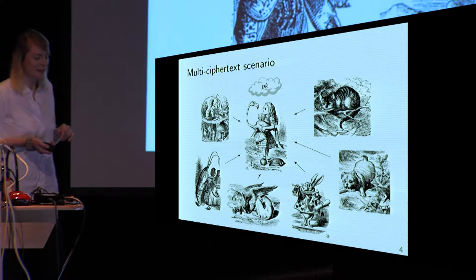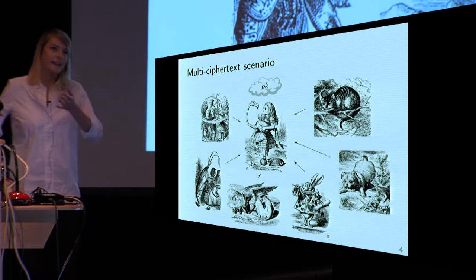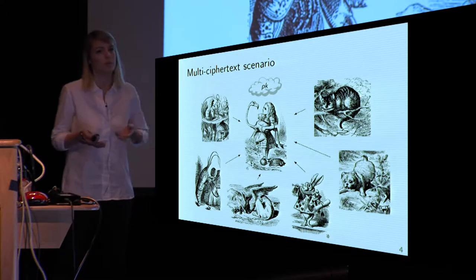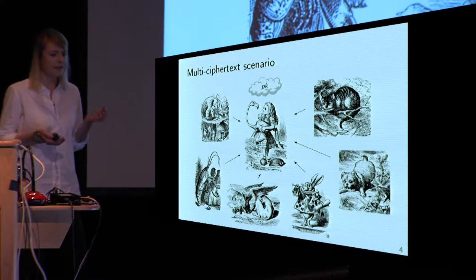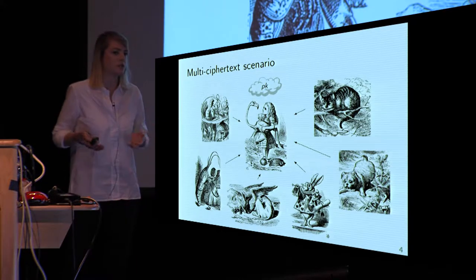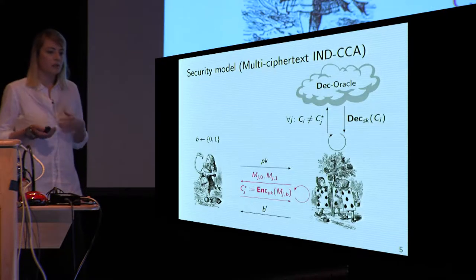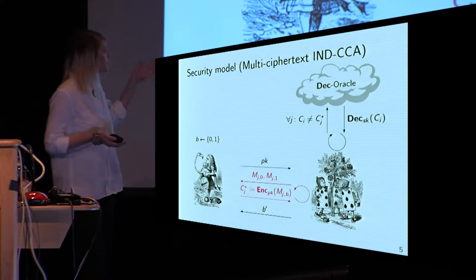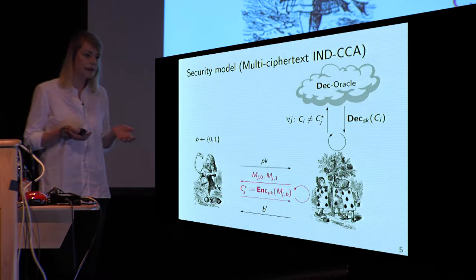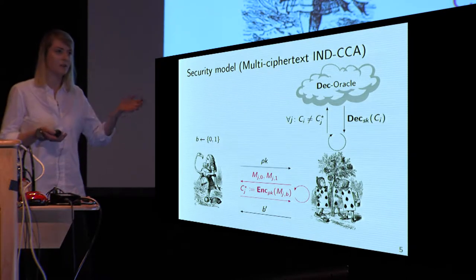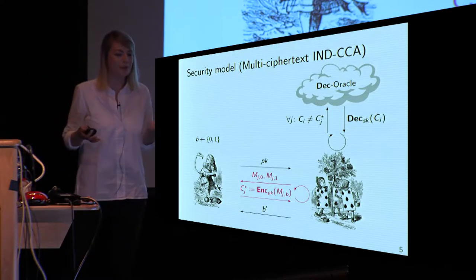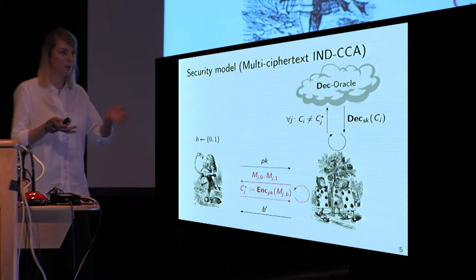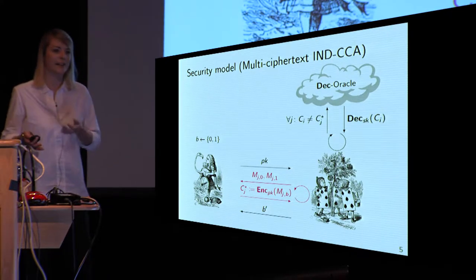This is not quite the security model we want to use in this talk. In the real world, we don't want to have this isolated one person sending one message to Alice, but we have many, many more parties sending many, many more messages. If we think of Alice not as a person but as a server, this can be something like a billion messages, or something like two to the 30 messages a day. So what we really want is multi-ciphertext IND-CCA security. A scheme is secure if the adversary cannot find out the bit corresponding to the right message with probability negligibly better than guessing.